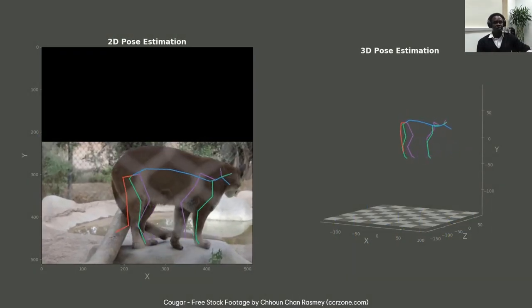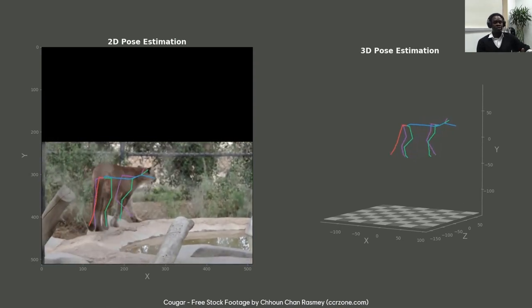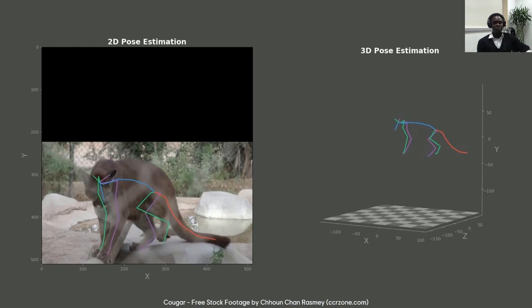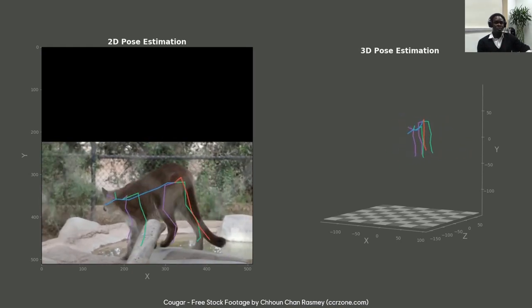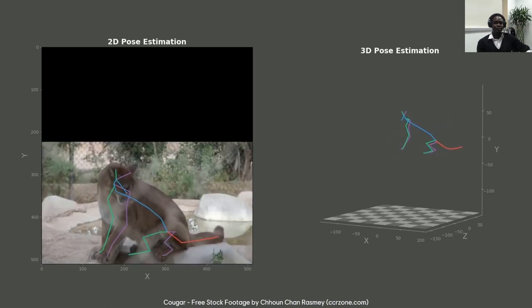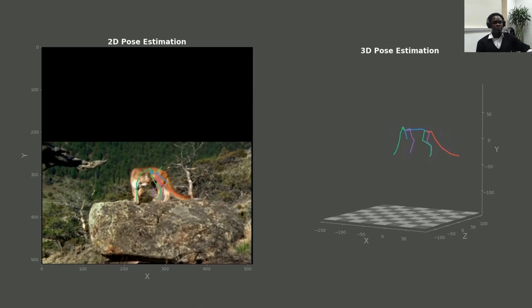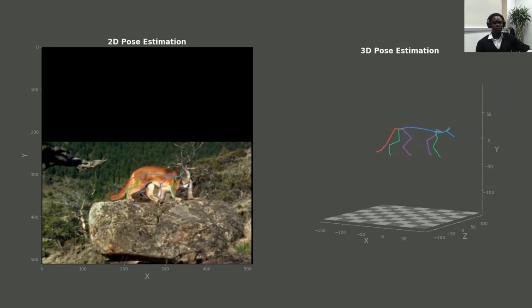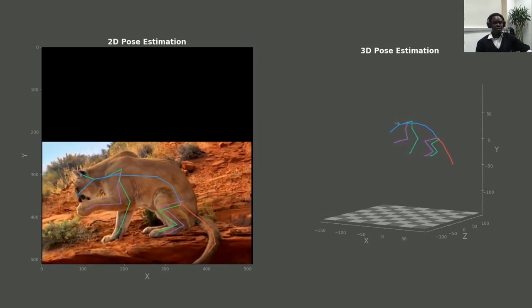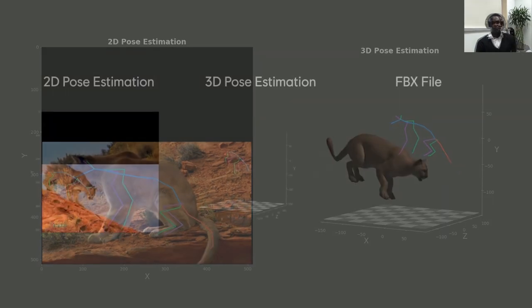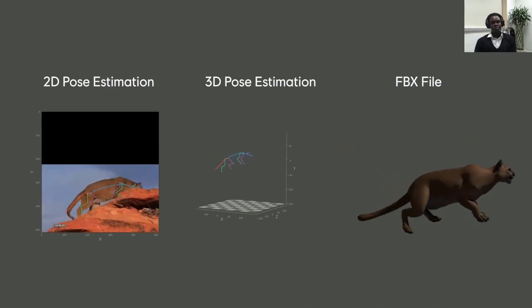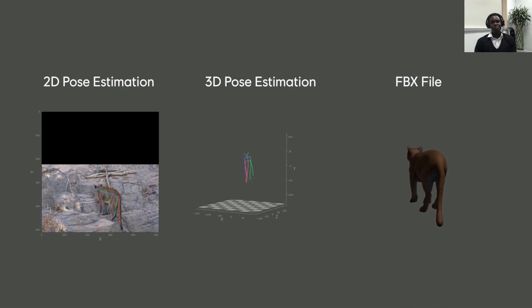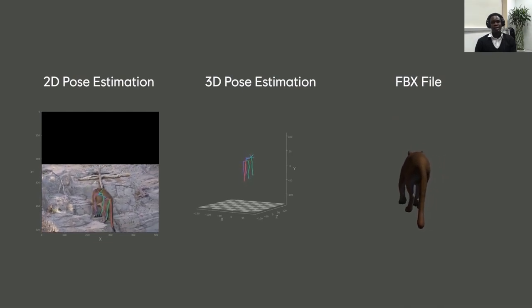Following are some of the results of ZooBuilder on videos from the wild. On the left are the results of OpenPose for 2D pose estimation and on the right the results of Pose3D for 3D pose estimation. As you can see, the results of ZooBuilder are quite satisfactory, especially when the animal is totally within the frame of the image or when there is no significant occlusion by some foreign object. These slides show some results after we apply the 3D animation generated by the machine learning models on a static 3D skeleton to animate the 3D mesh.